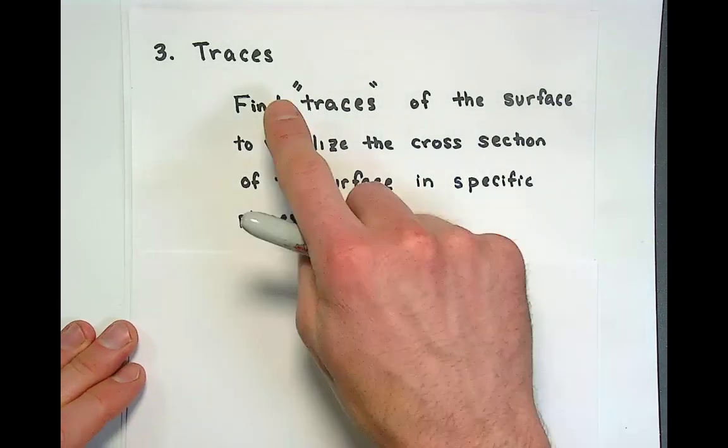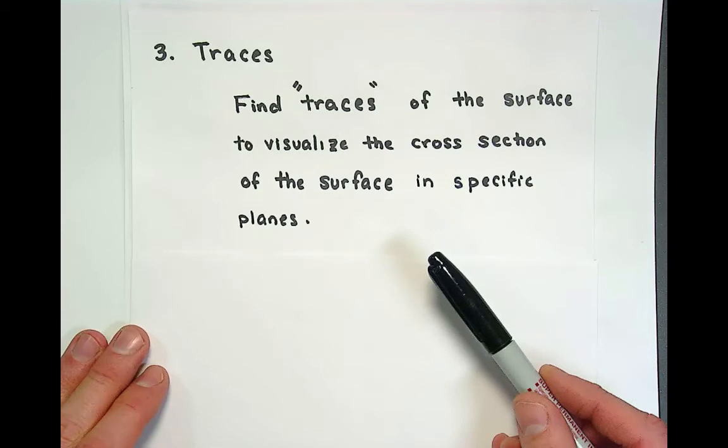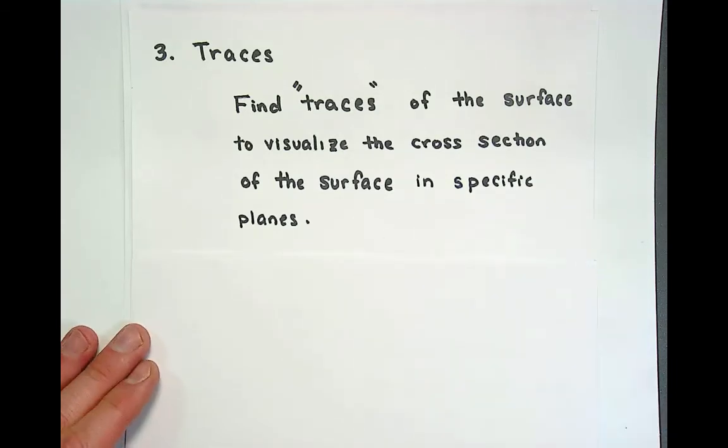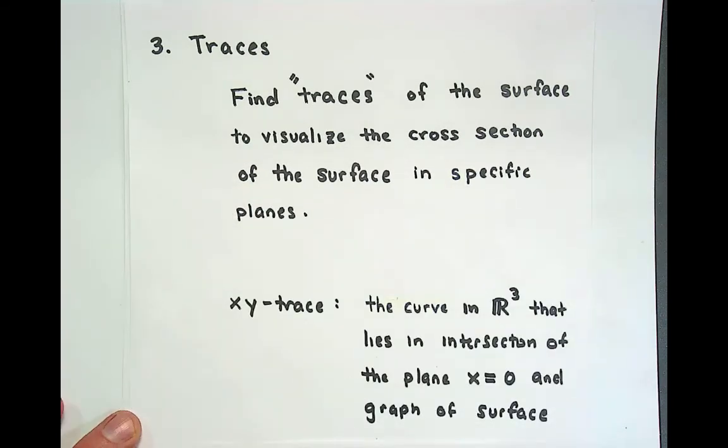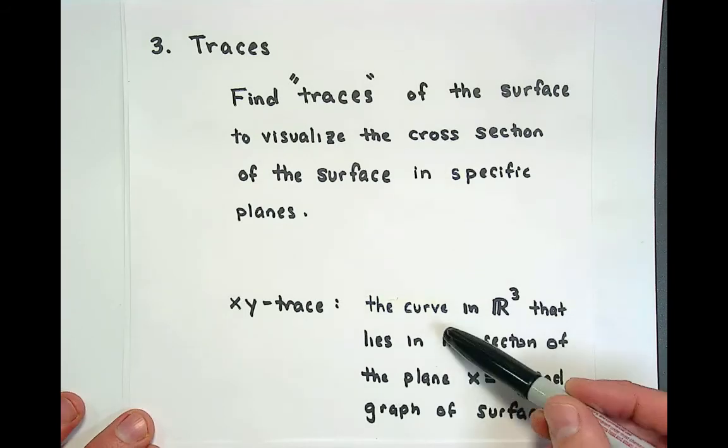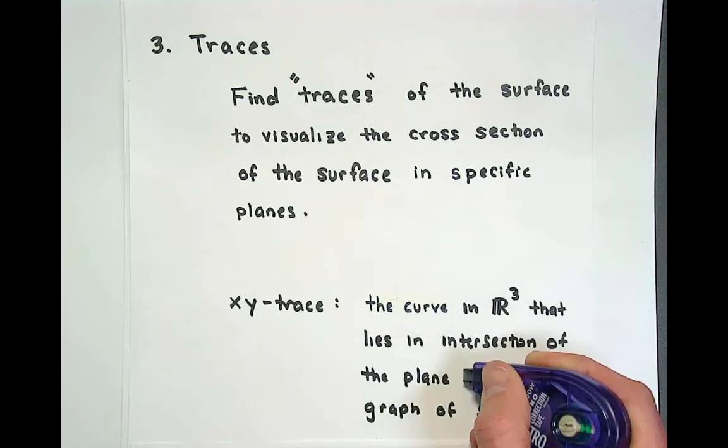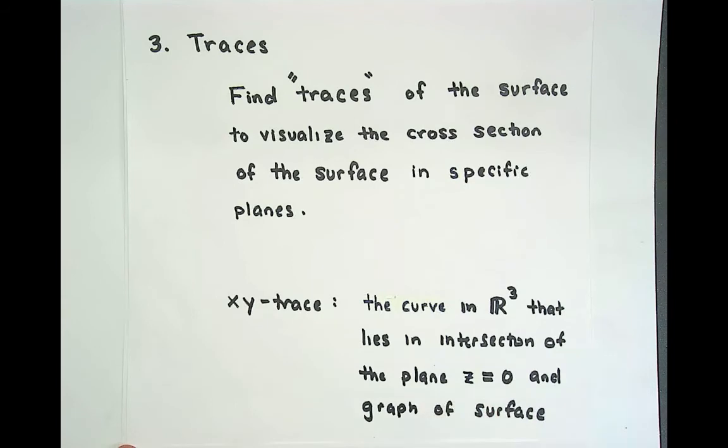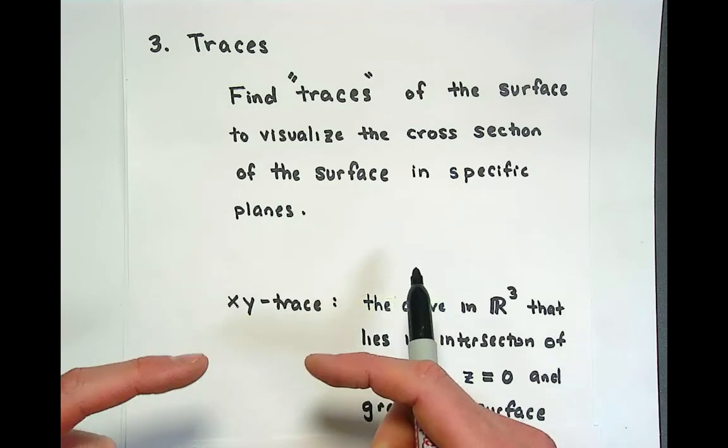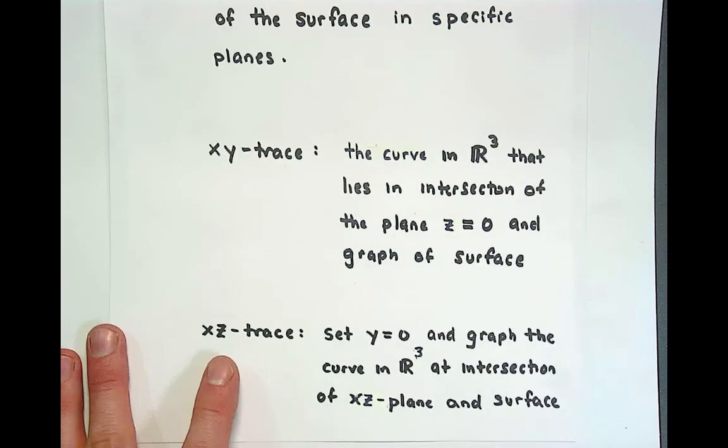Finally the last tool that we'll use to use our brains before we use computers is the concept of a trace. And to find the trace of a surface we actually take a cross section of the surface in a specific plane that we define. There are three very very famous traces. The first one is what we call the xy trace that's where we look at a curve in R3 that lies in the intersection between the plane z equal to zero, so this would be the xy plane and the equation for the xy plane is z equal to zero, and then the graph of the surface. So this trace is literally where a plane at zero intersects the surface that we're looking at.